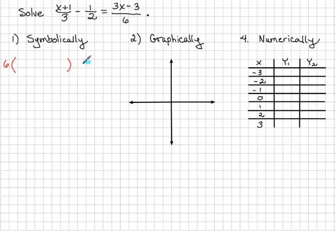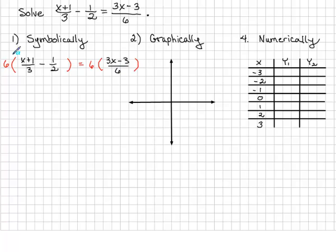To solve the equation symbolically, we'll first multiply both sides by 6 to clear out all the fractions. 6 is the least common denominator. Make sure you distribute the 6 to each term inside the parentheses.